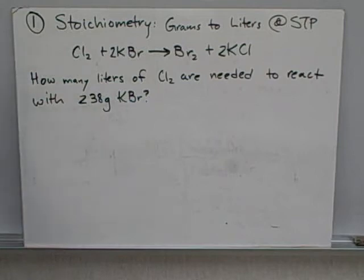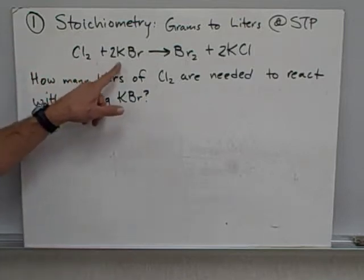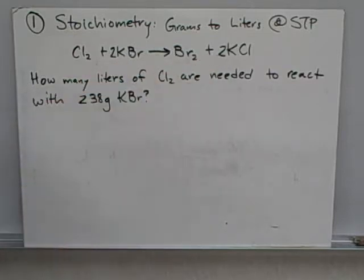Hi, what we're going to be doing today is doing a couple more problems that involve more complicated stoichiometry and chemistry. We've got chlorine gas reacting with two moles of potassium bromide to make bromine gas and two moles of KCl. This is what we call a single replacement reaction.